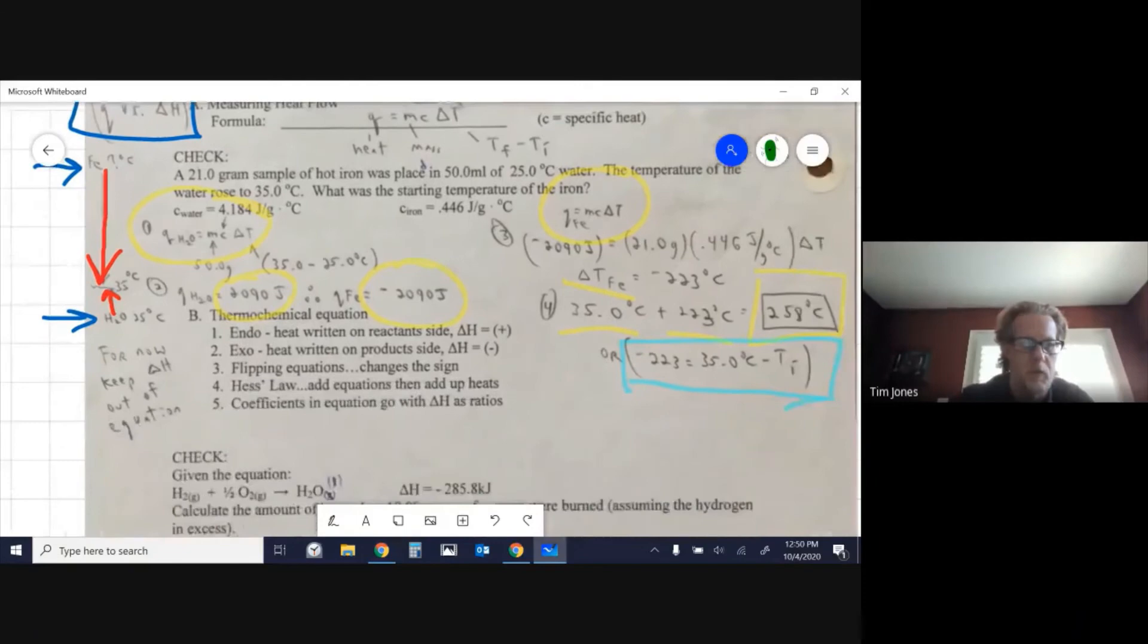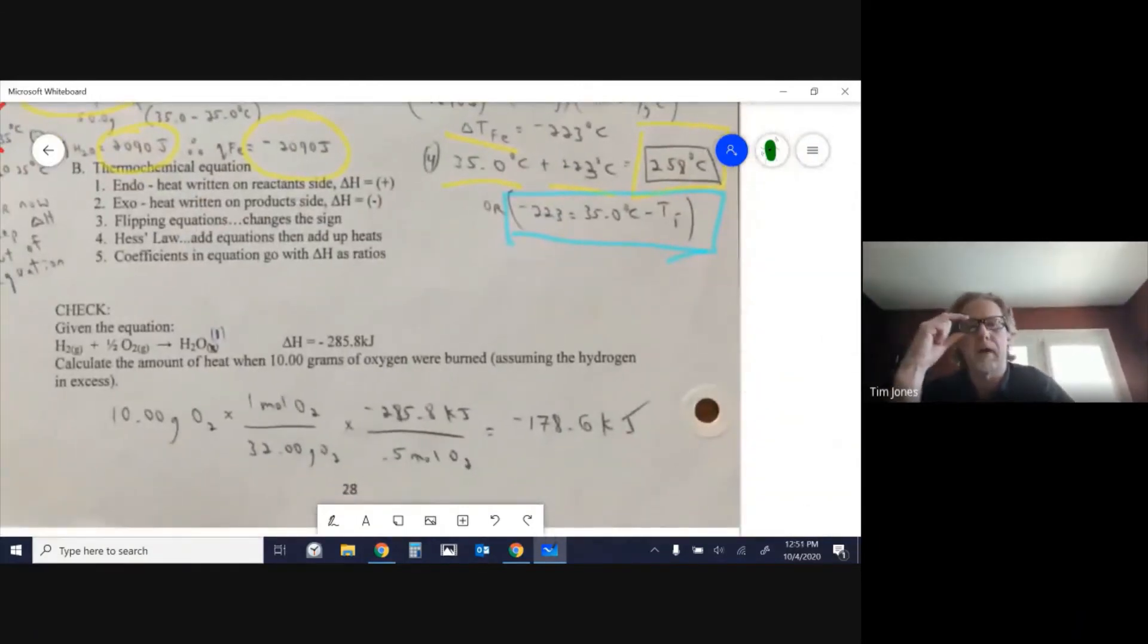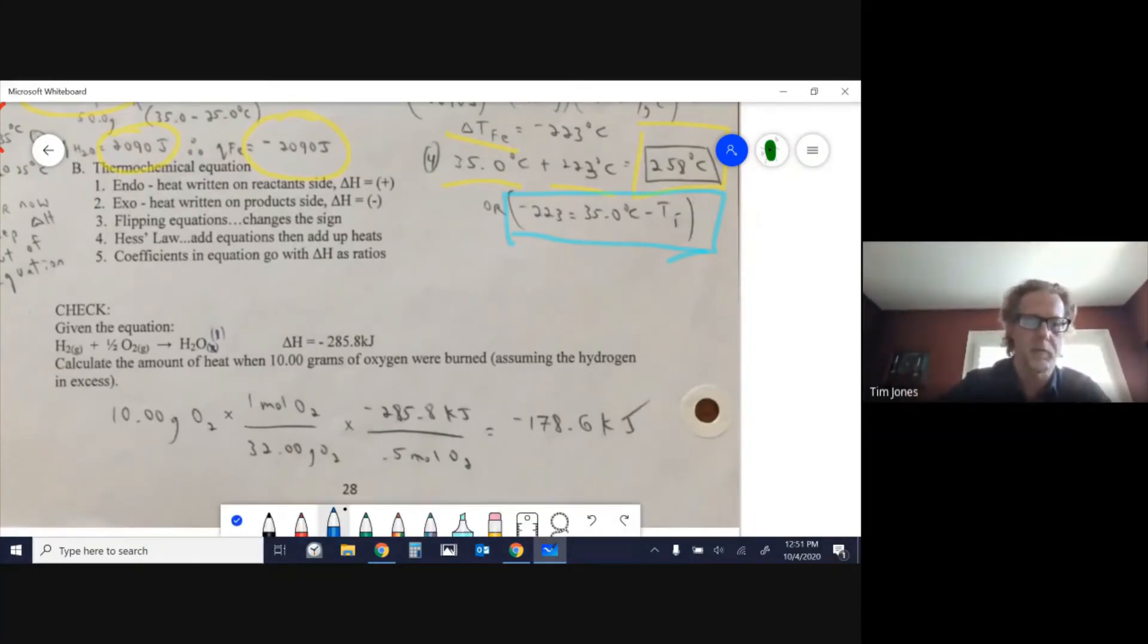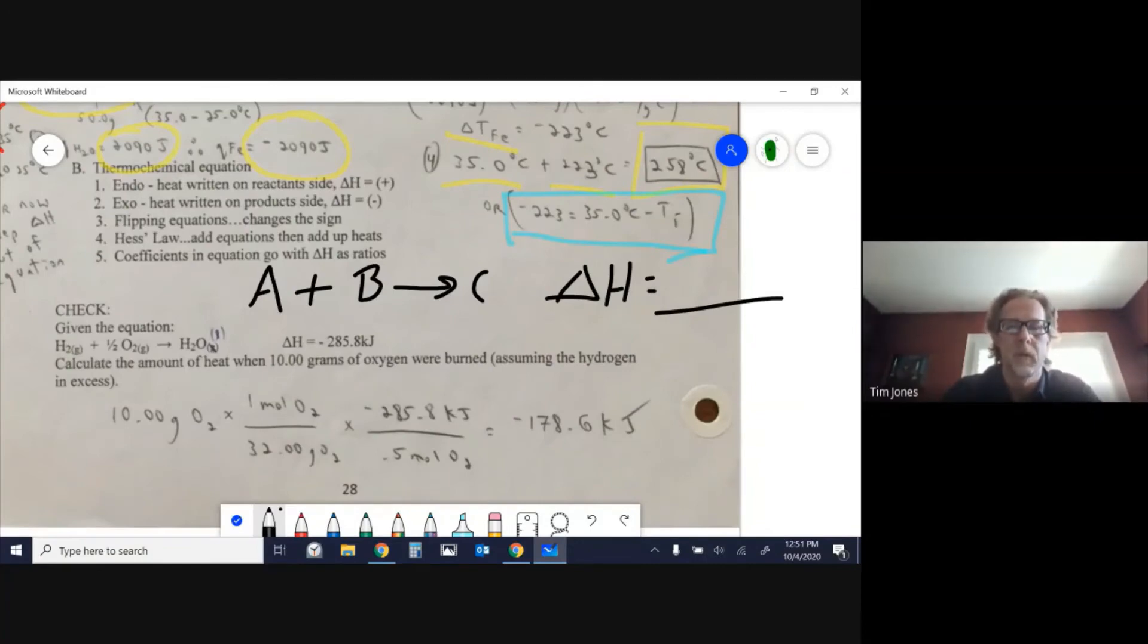Thermochemical equations - sounds fancy, but it just means when you write your reaction, you include the heat. One way is to write your reaction, like A plus B forming C, and say off to the side delta H is whatever. Another way is to put it actually in the equation as if it was a chemical.